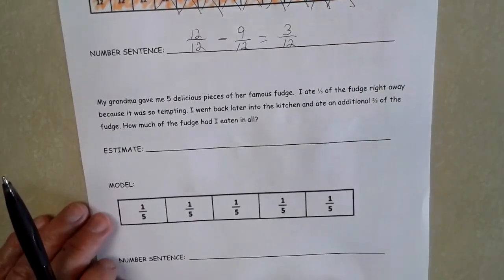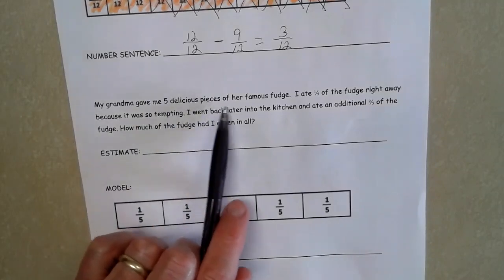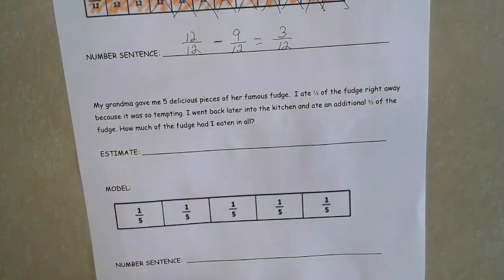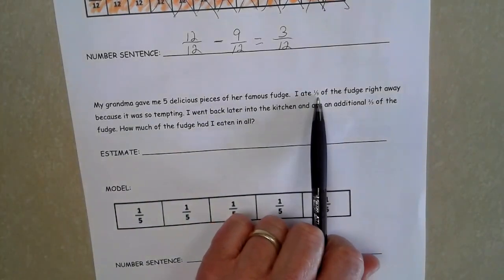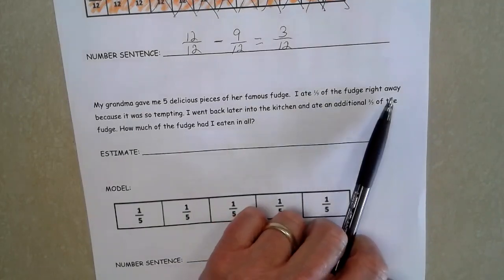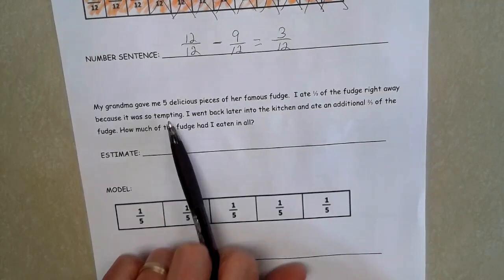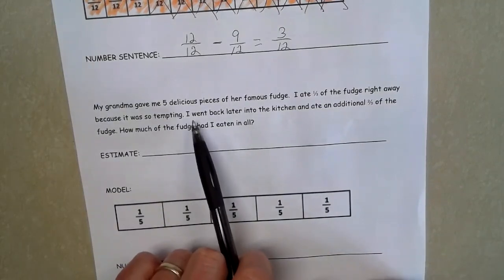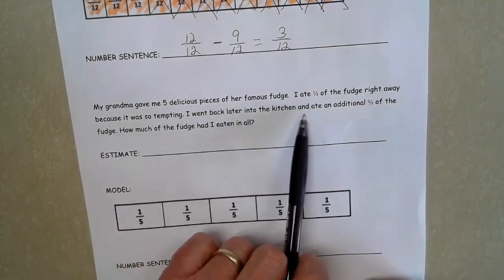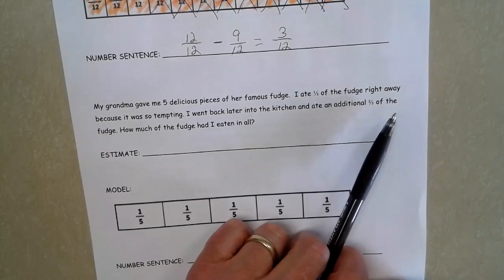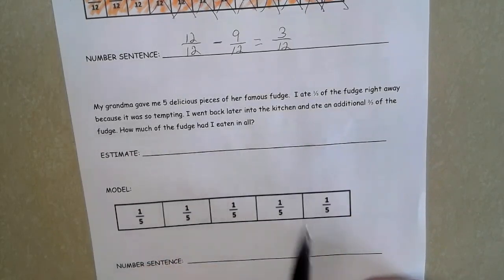And our last problem, grandma gave me five delicious pieces of her famous fudge. I ate one-fifth of the fudge right away because it was so tempting. Oh, I bet it is. I wish I had some of that fudge right now. So I went back later to the kitchen and ate an additional two-fifths of the fudge. How much fudge have I eaten in all?